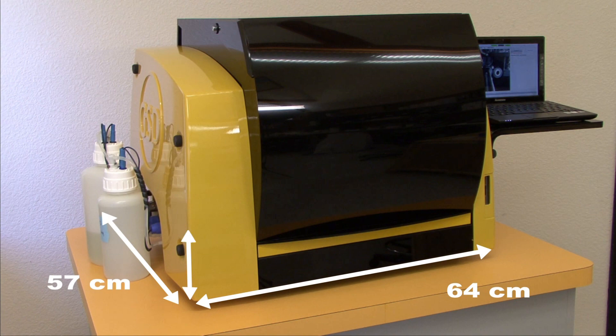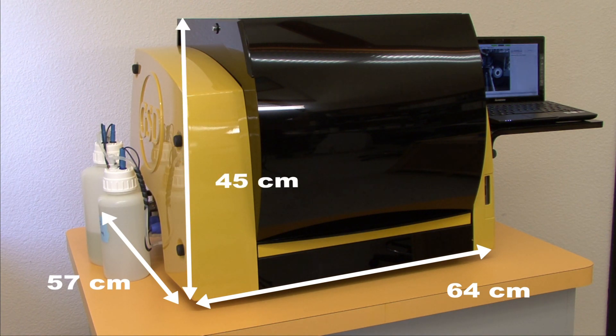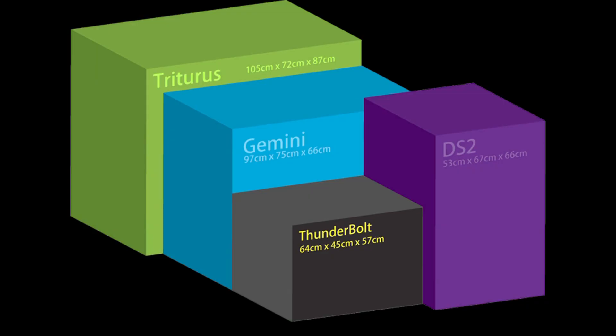At only 64 centimeters wide and 57 centimeters deep, the Thunderbolt has the smallest footprint and overall volume of any comparable machine on the market.